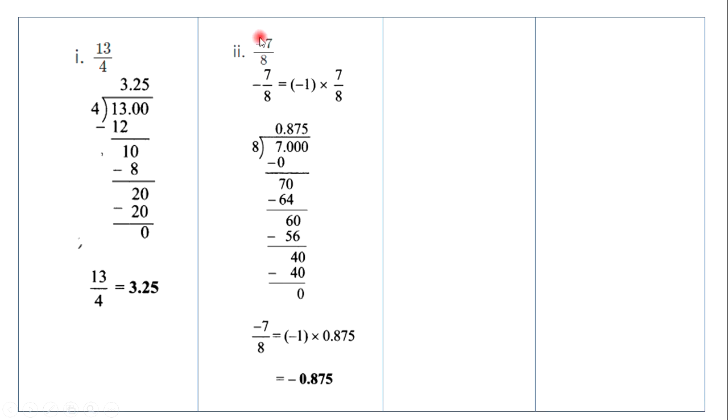Moving on to the next sum, we have a negative number here: minus 7 upon 8, which you are going to convert into decimal form. Even if you have a negative sign, let's just treat it as minus 1 multiplied to the given number. Carry out the division as we normally do, and when you write the final answer, place the decimal point correctly as also the negative sign without fail.